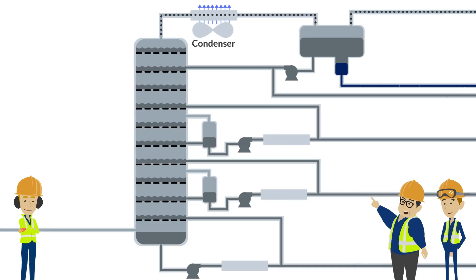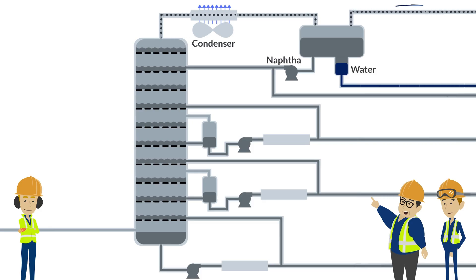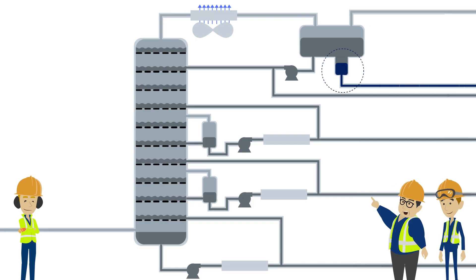Overhead gases flow through a condenser, which cools the gases and causes water and naphtha to drop out as liquids. The remaining gas is sent downstream to a compressor. Water is separated from the hydrocarbon liquid, removed from the system, and sent to a water treatment unit so it can be reused.